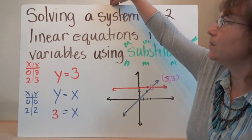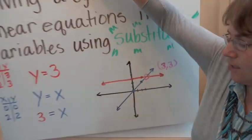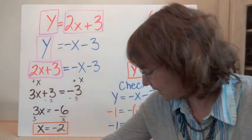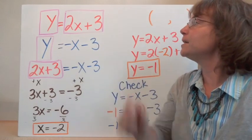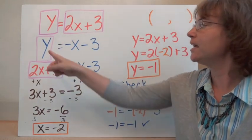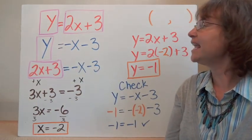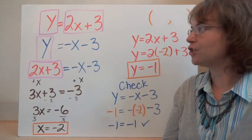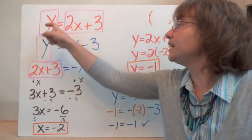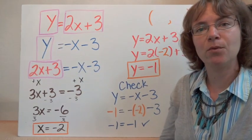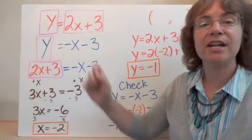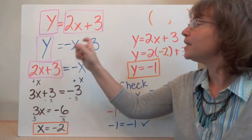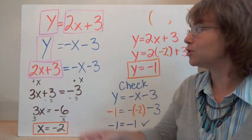Now let's look at a little bit more complicated situation. We have two equations: one of them is y equals 2x plus 3, and the other is y equals negative x minus 3. Now we're going to use substitution. We want the y's to be equal to each other because that's the way they cross — the y coordinate has to be equal for both of those equations in order for them to have the same solution.